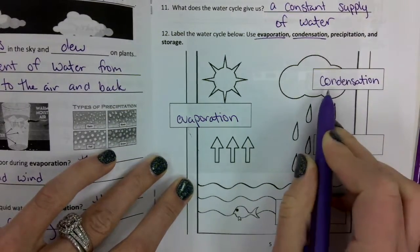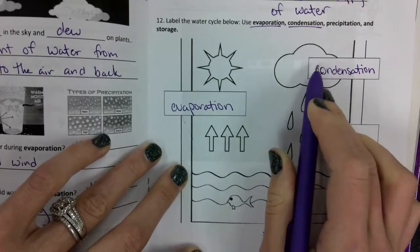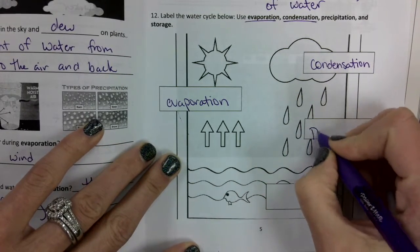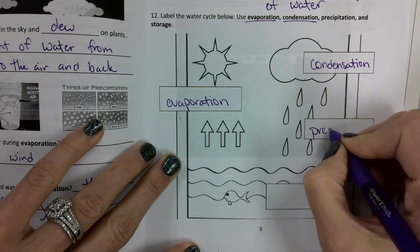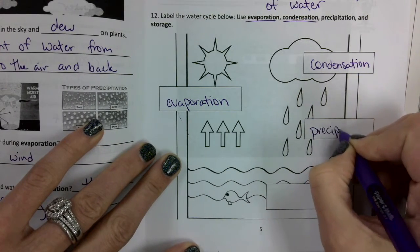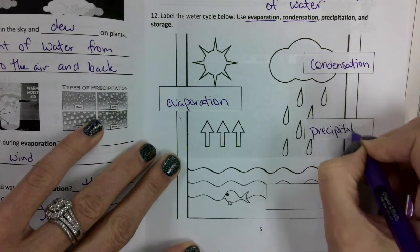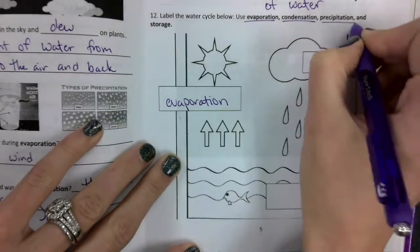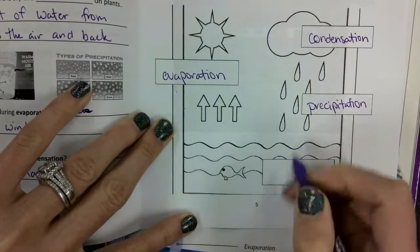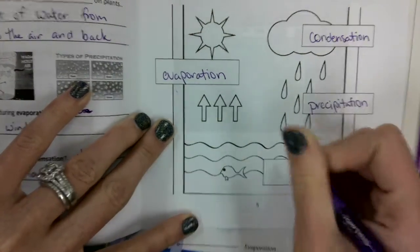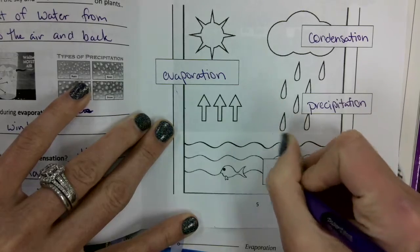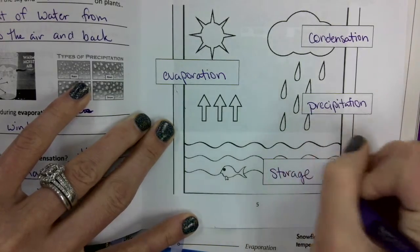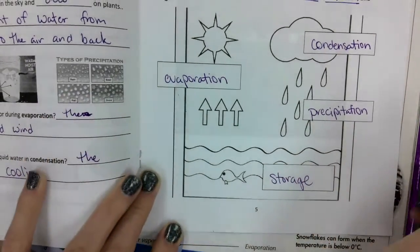Then when that rain gets too heavy in the clouds and starts falling, it's precipitation. And then finally when it's in a lake or in the ground, we just call that storage.